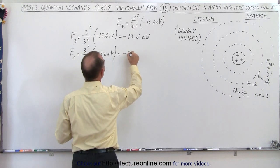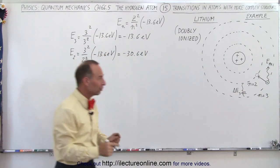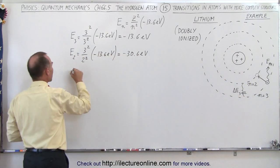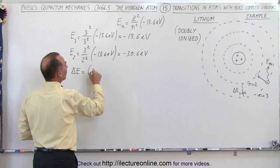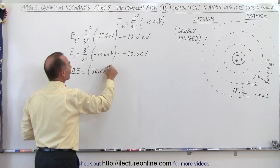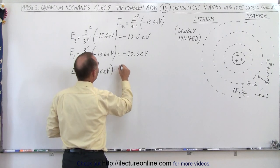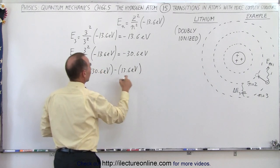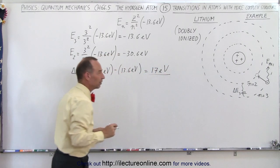So what we want to do next is find the difference between the two energies, between the two orbits. And so the delta E is going to be equal to 30.6 electron volts, and again I only care about the absolute value of the difference, so minus 13.6 electron volts. So the difference here would be 17.6 electron volts between the two levels.